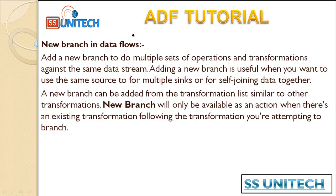when you want to use the same source to perform multiple things, or for self-joining data together. A new branch can be added from the transformation list, similar to other transformations. New Branch will only be available as an action when there is an existing transformation following the transformation you are attempting to branch — we will see this in the practical. The New Branch transformation is very useful, for example, if we